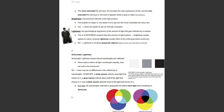Achromatic lightness means that all wavelengths are reflected. When objects reflect all light wavelengths equally, they are said to be achromatic. A white square reflects most light that shines on it, a gray square reflects about half of the light, and a black square absorbs most of the light that shines on it. All wavelengths reflected in grayscale will reflect more light than something reflected in dark scale.